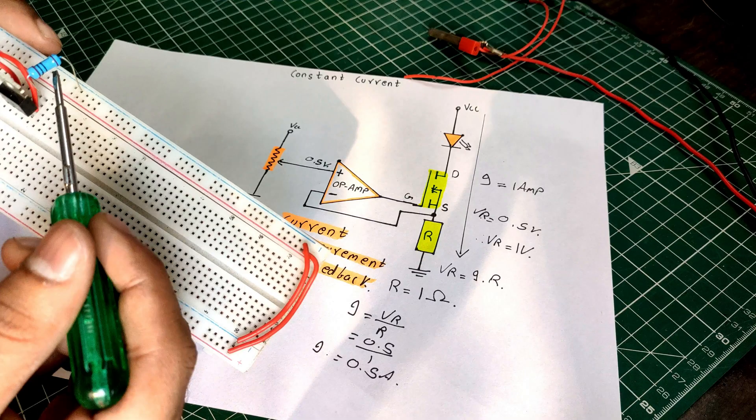As the current setting is heavily dependent on the resistor R, a low tolerance and high power rated shunt resistor is mandatory for this purpose.